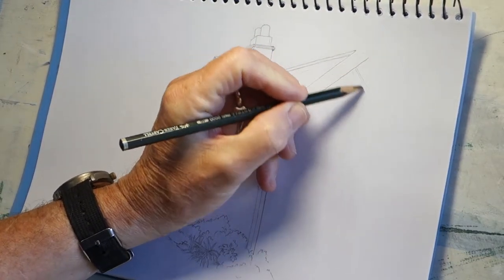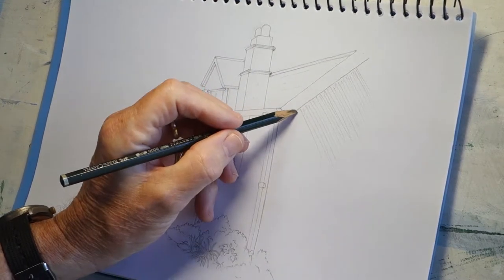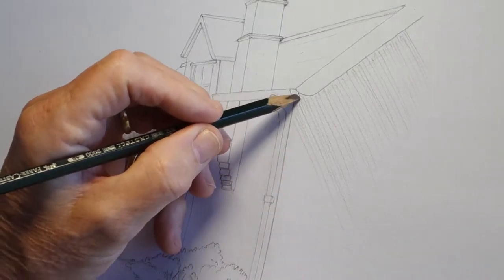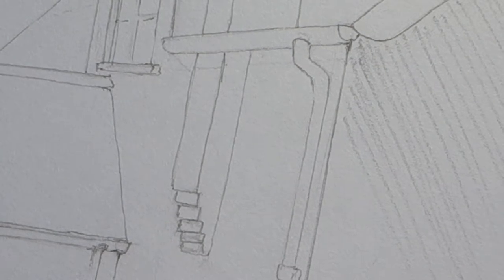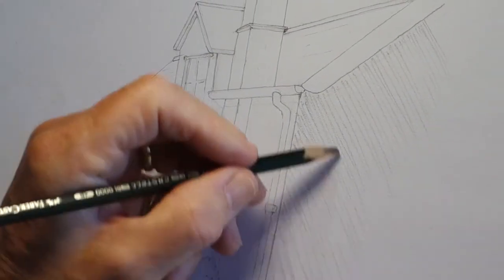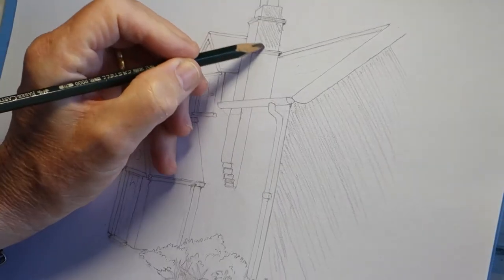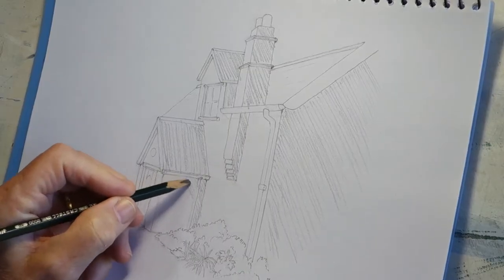Just use parallel strokes of the pencil in a uniform manner. And then you just keep going over them until you get the shade that you want. Or you can leave them looking a bit on the rough side.